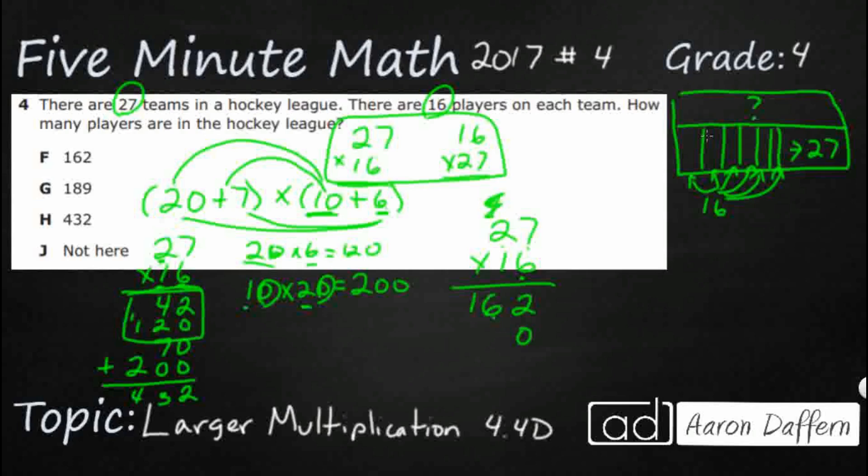Get rid of that. Put a 0 here because we're dealing with this 1, which is in the tens place. 1 times 7 is 7. 1 times 2 is 2. But really, it's 270. And that's what I have right here with those two.